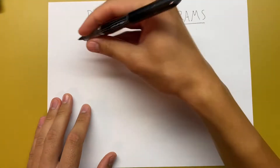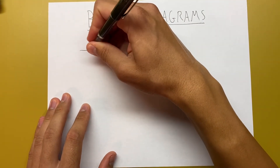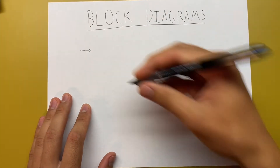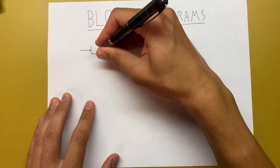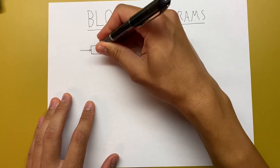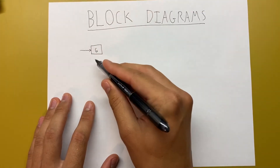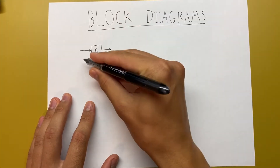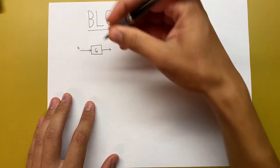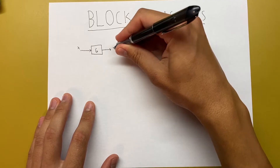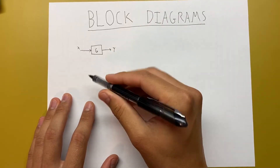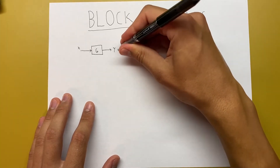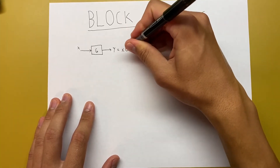Signals in block diagrams are represented by arrows that show the direction of the signal flow. Systems are represented as blocks — so maybe this is system G. Most systems have an input signal and an output signal. We can call the input signal x and the output signal y. If we're dealing with this in the frequency domain, we can say that y is equal to x times G.